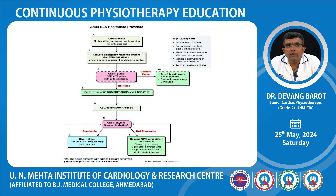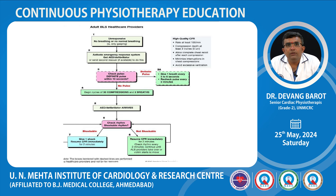This is the flowchart of adult BLS for healthcare providers. If any victim is unresponsive, with no breathing or no normal breathing, activate the emergency response system and get the AED. Check for pulse. Begin cycles of 30 compressions and 2 breaths. Check for rhythm. If shockable rhythm, give one shock and resume CPR immediately for two minutes.